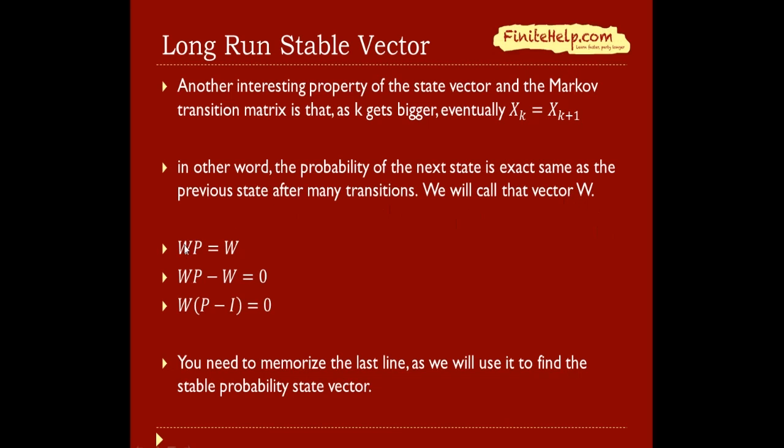So here Xk equals W. When we take W times P, we're going to get W again. This is the definition of W. That if you take a transition one more time, it's still the same thing. We'll rearrange it, subtract W on both sides. Here I'm going to pull the W out, so we have W times (P-I) equals zero. You really only need to memorize this last line. This is to explain how you get to this equation, but as far as calculations go, this equation is what you're going to use.